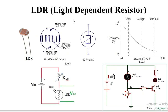LDR is a light dependent resistor — it is a type of resistor where the resistance of this component varies based upon the intensity of light. If the intensity of light passing on the LDR increases, the resistance of this component decreases. If the intensity reduces, the resistance increases. For example, before light is passing on the LDR the resistance may be up to around five mega ohms, but when a very high intensity of light is passed onto the LDR, the resistance decreases — for example, from five mega ohms to five kilo ohms.